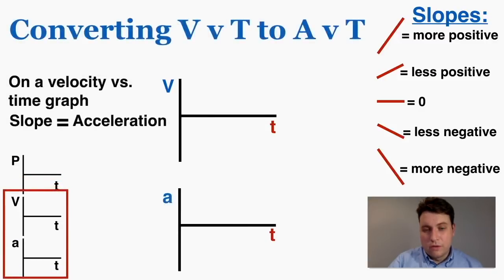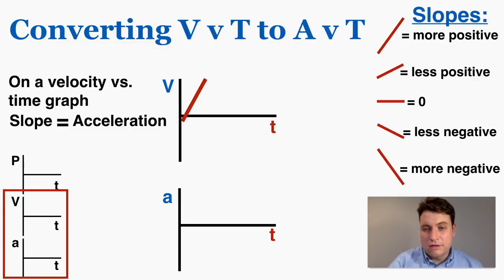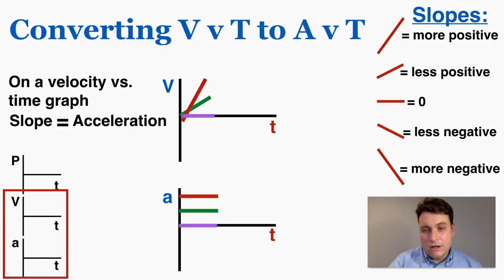Now let's shift to translating from velocity graphs to acceleration graphs. Velocity and acceleration operate on the same rule: the slope of the velocity graph equals the acceleration. If you have a velocity graph with a positive and constant slope, the acceleration will be positive and constant. If it's less positive and constant, the acceleration is less positive but stays at that constant spot. If the slope is zero, acceleration is zero. If the slope is negative, acceleration is negative.